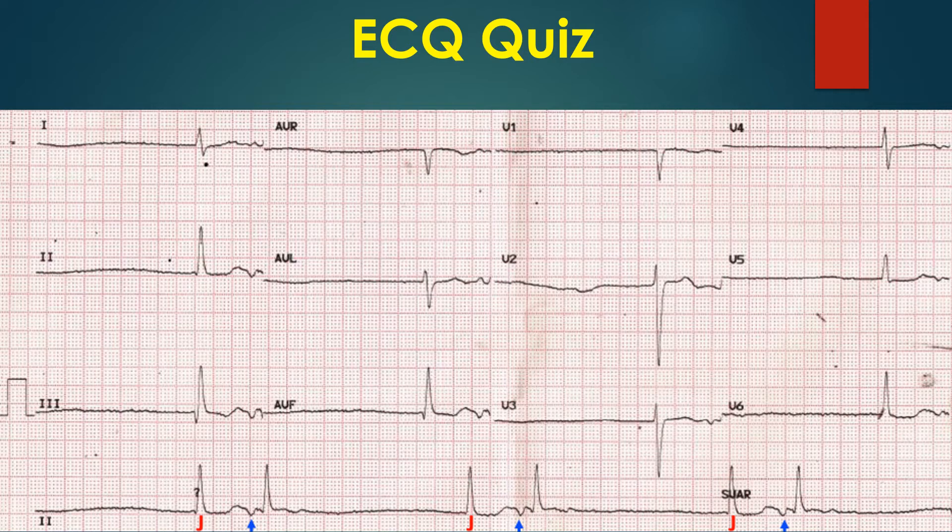In escape-echo bigeminy, the second beat is an echo beat rather than a sinus beat. The inverted P-wave preceding the second QRS could be retrograde activation of the atrium from the preceding QRS. In that case, the initial QRS becomes a low junctional beat with a retrograde P-wave occurring after the QRS. This P-wave is then conducted back into the ventricles, producing the next beat — an echo beat — making it escape-echo bigeminy, a very rare variety.